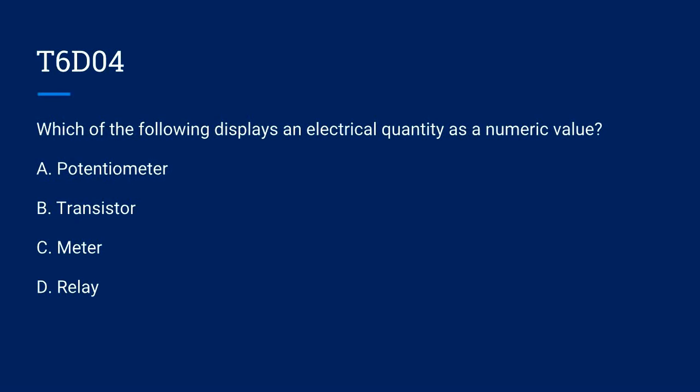T6D04. Which of the following displays an electrical quantity as a numerical value? A. Potentiometer. B. Transistor. C. Meter. Or D. Relay. The correct answer is C. Meter.